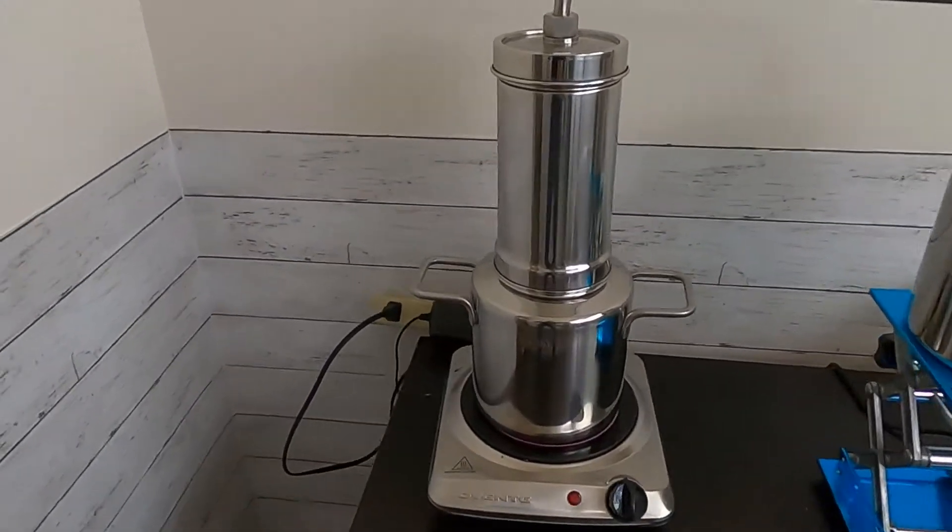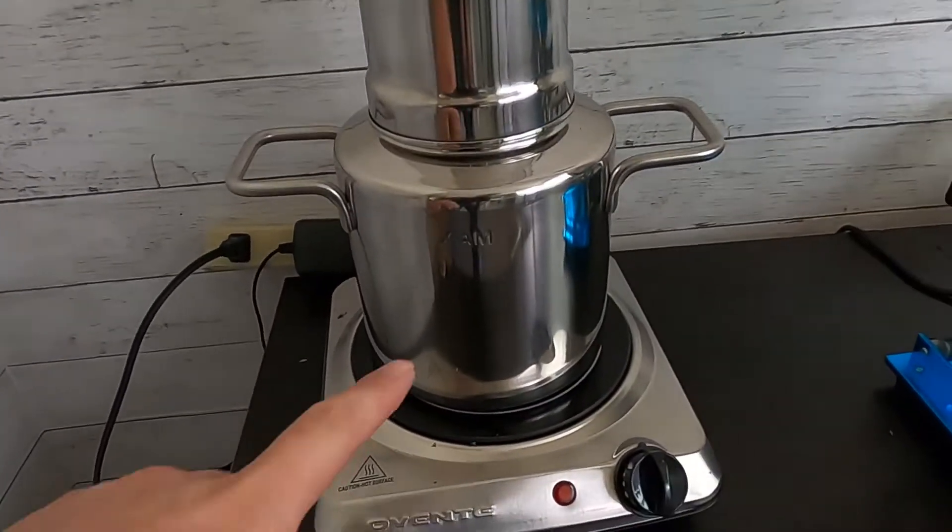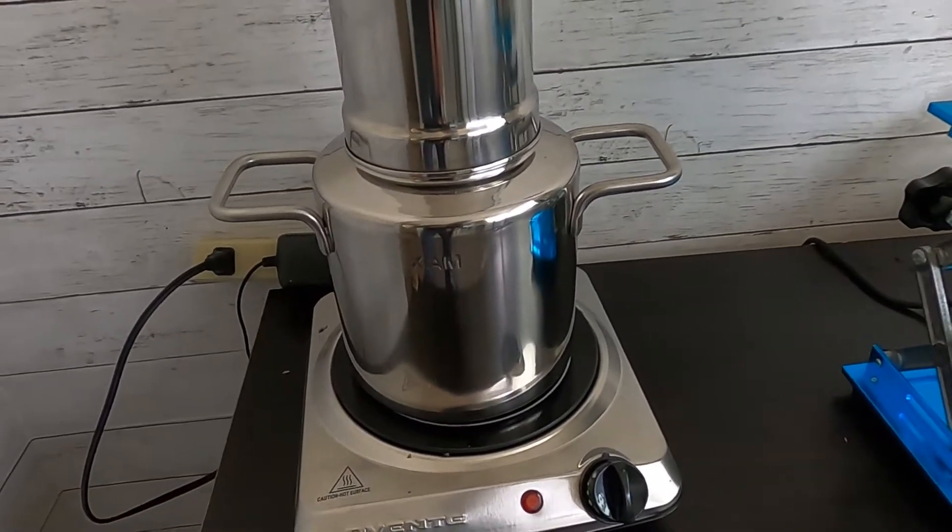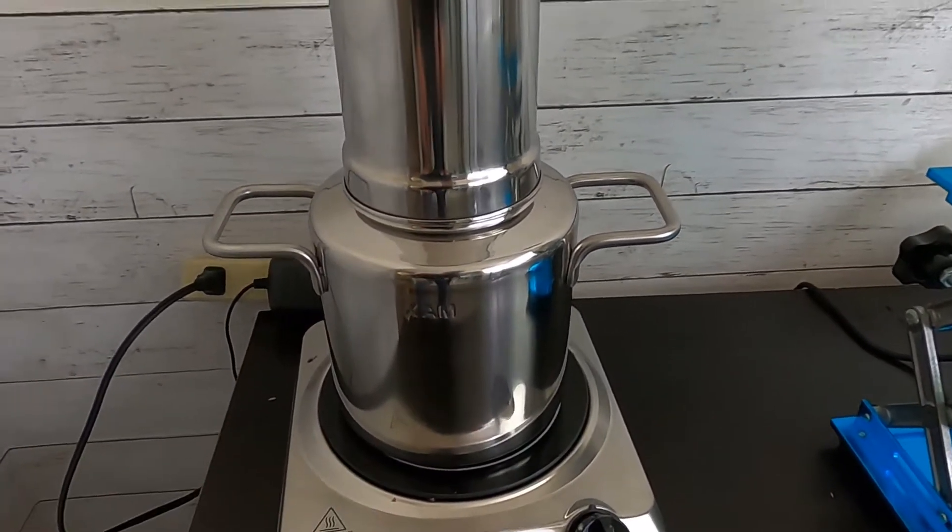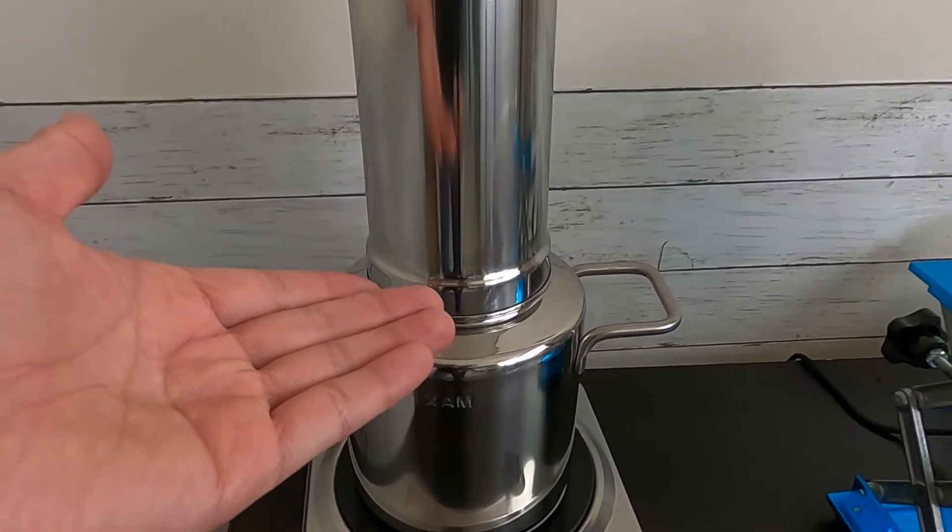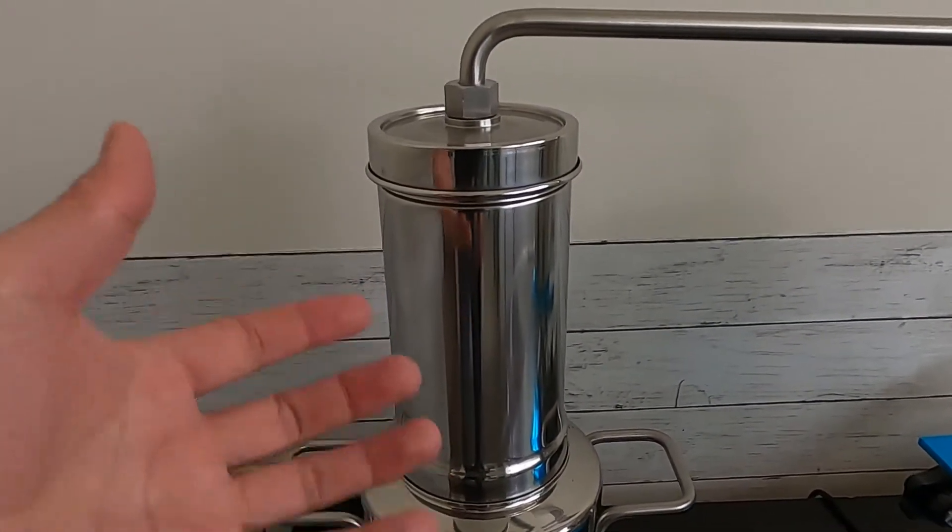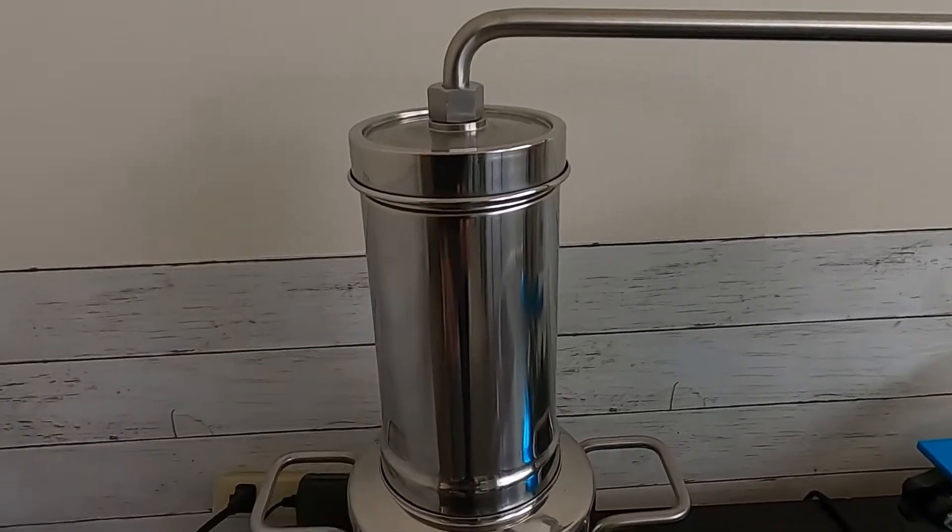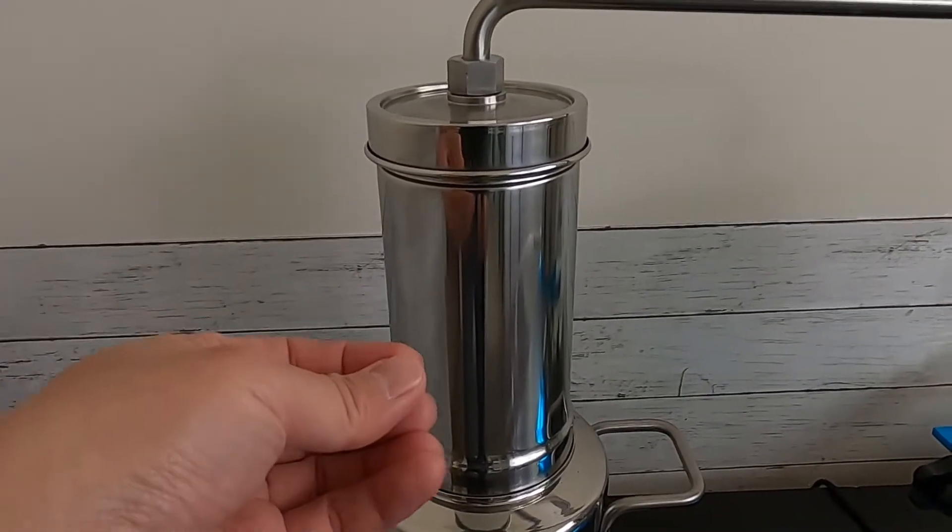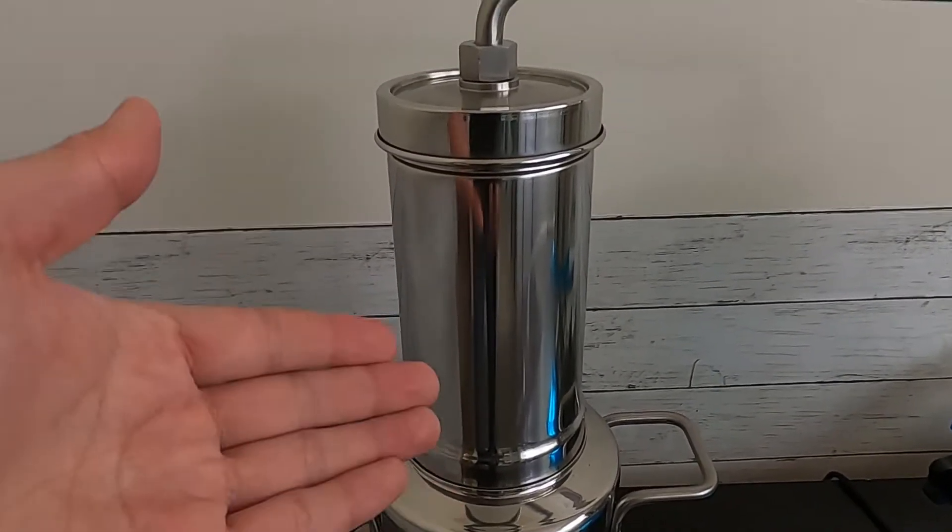The system works by boiling water in here. After boiling, the steam comes up and goes through the flower material. This is called steam distillation, where the steam carries the volatile compounds.